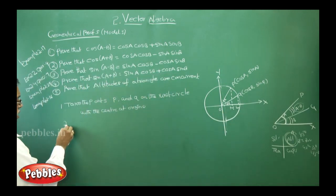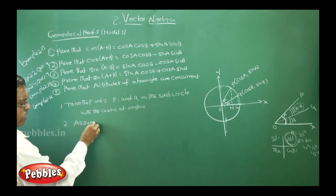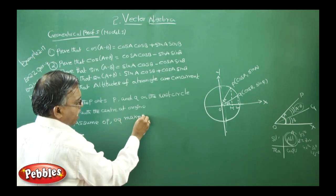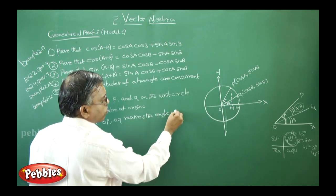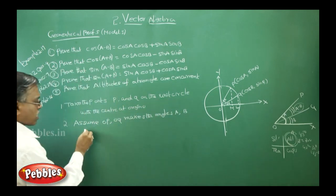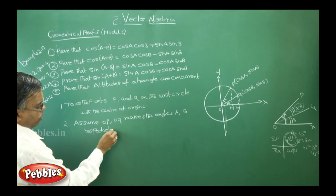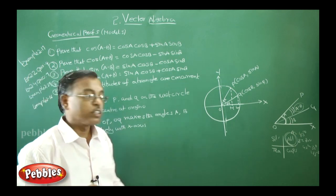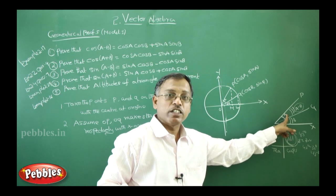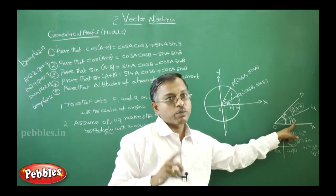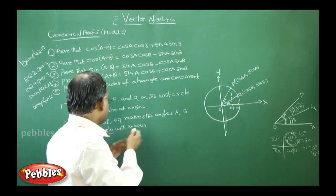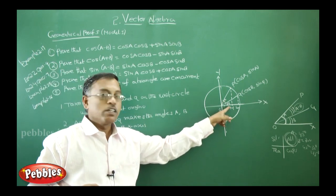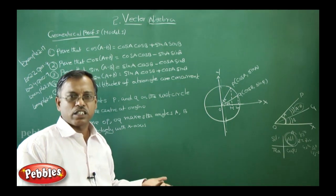That is your first point. What is your second point? Assume OP, OQ makes the angles A, B respectively with x-axis, respectively with the x-axis.